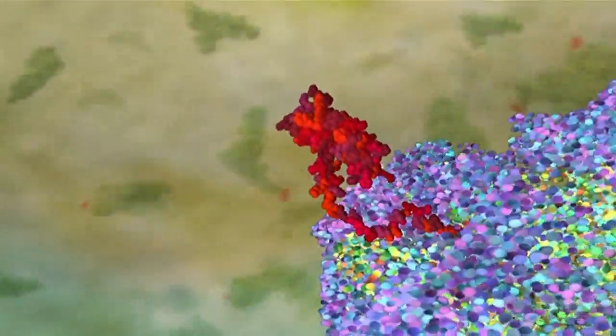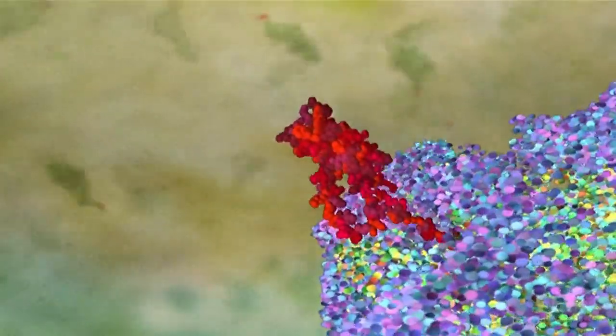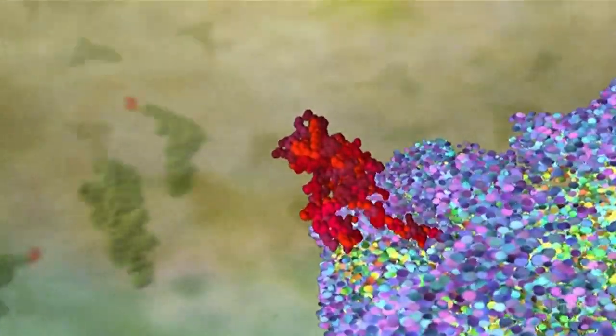Thus, the central dogma explains how the four-letter DNA code is, quite literally, turned into flesh and blood.